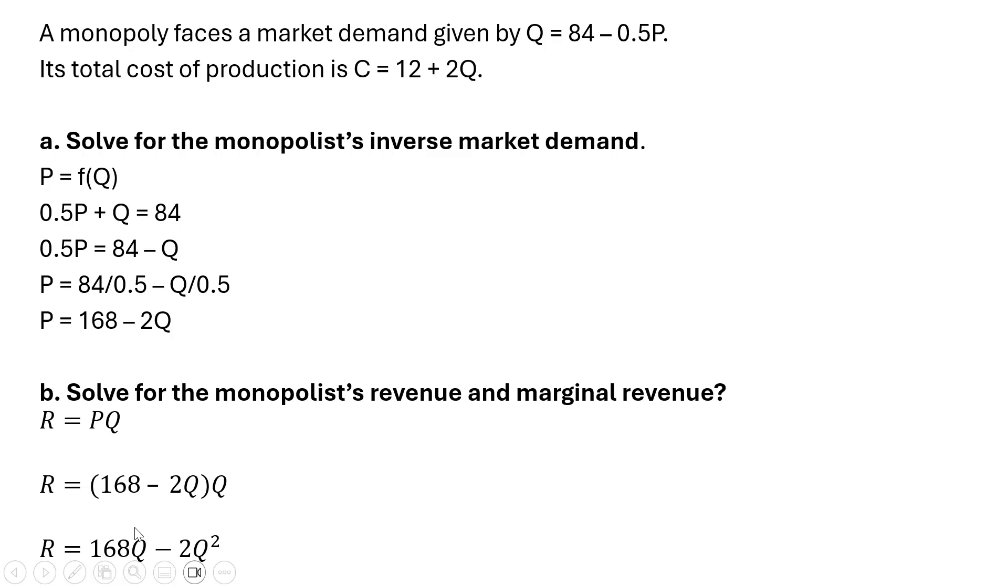Simplifying here a little bit, we get the total revenue for the monopolist. Marginal revenue is the derivative of this revenue equation with respect to q. The derivative of 168q is 168. The derivative of minus 2q squared is minus 4q as I took this exponent on the q term and multiplied it by the 2 in front of the q, and then we subtracted 1 from that exponent.